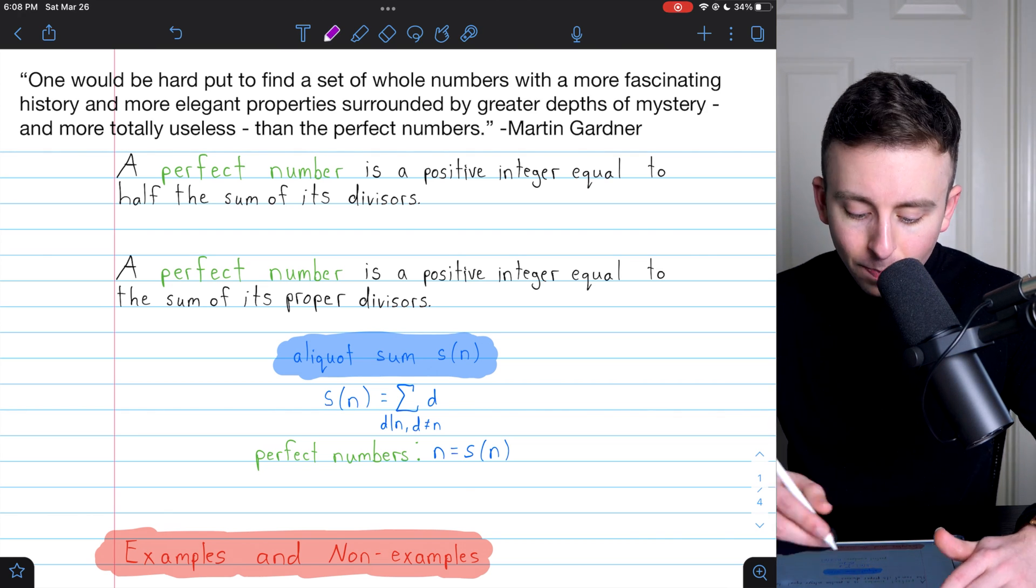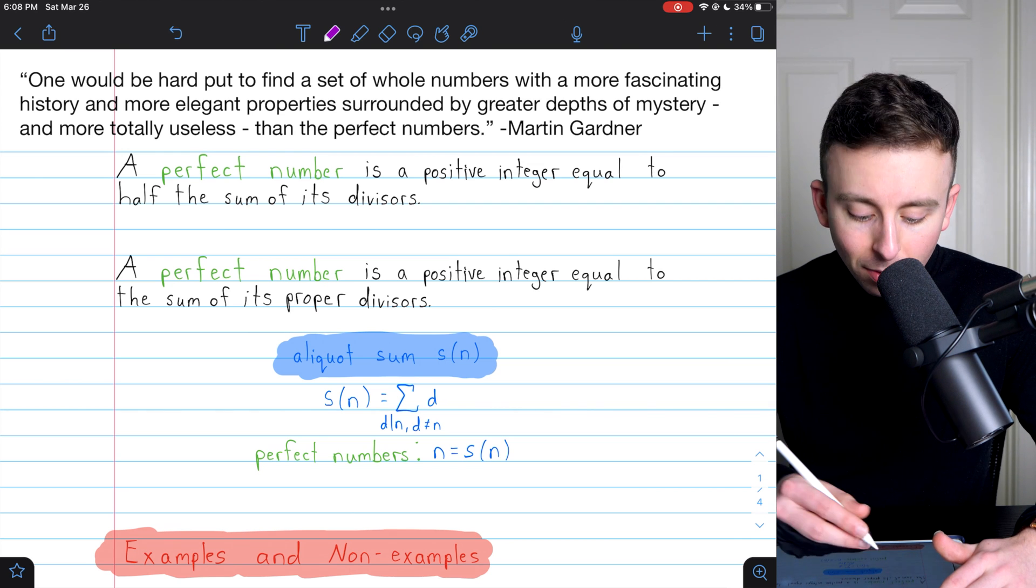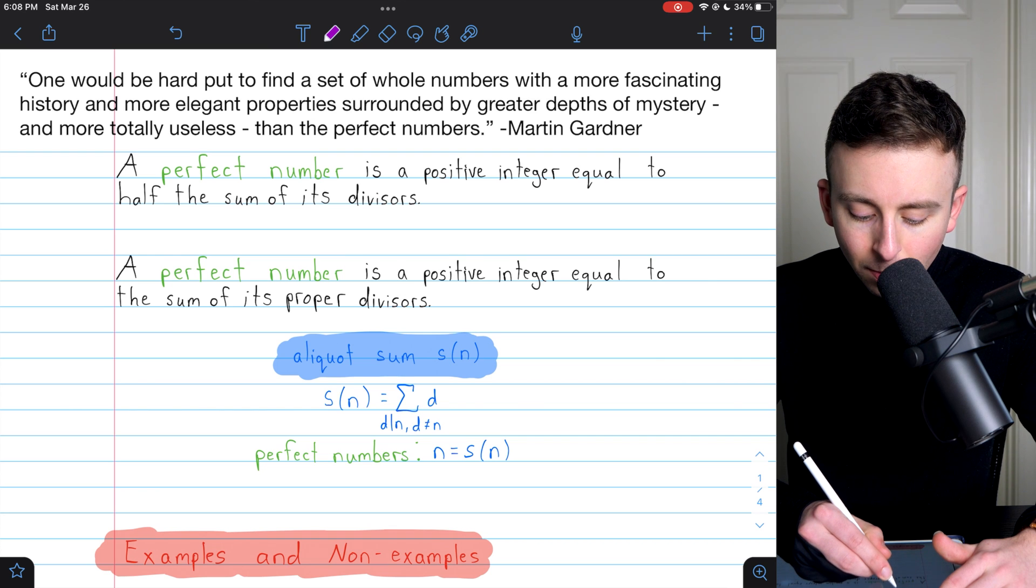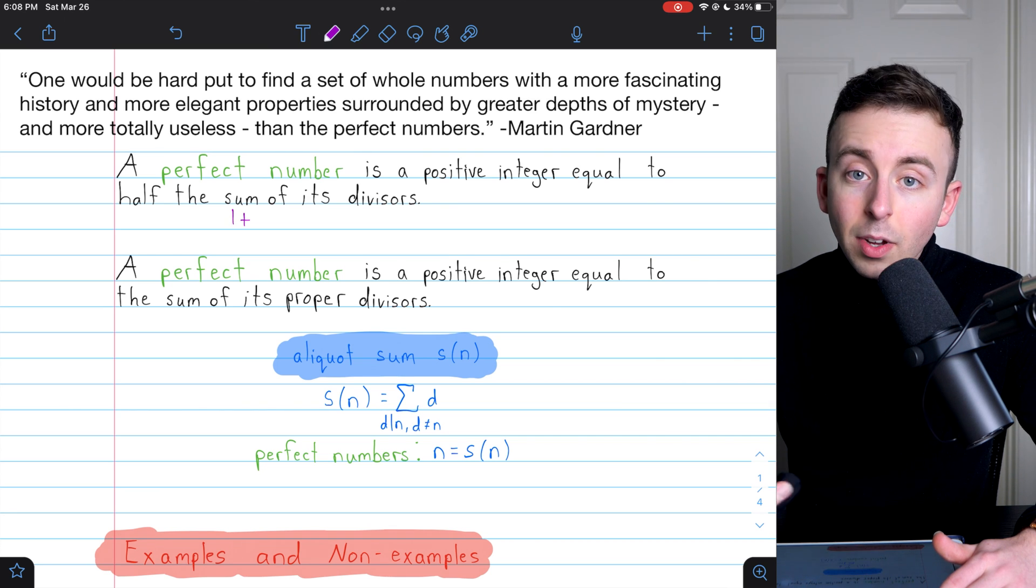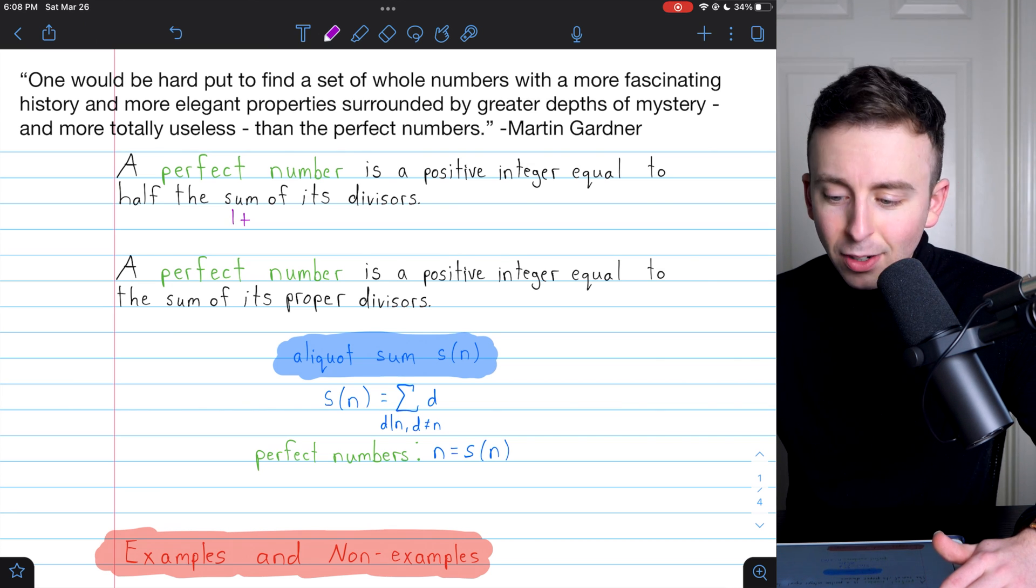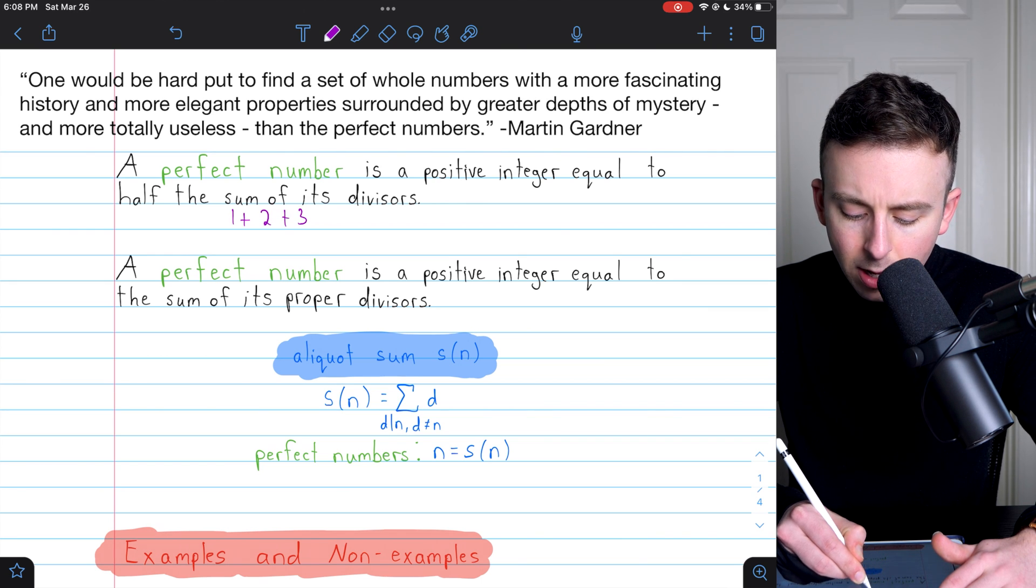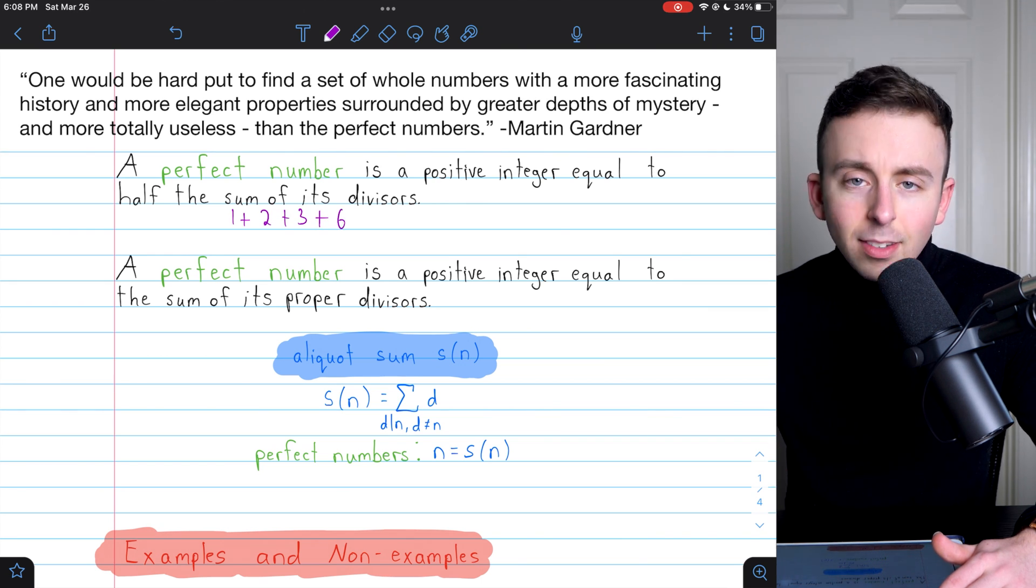Let me show you an example. Consider the number 6. What are the divisors of 6? Well, that would be 1. 1 is a divisor of every positive integer. We also have 2 and 3 and 6 itself. Those are all divisors of 6.